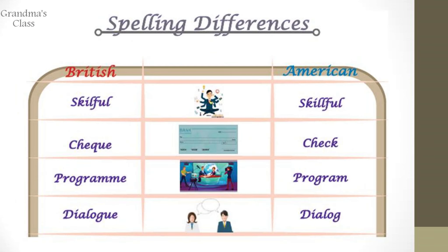Now let us see the spelling difference. In British English, skilful — there is only one L. Whereas in American English you have two Ls. Cheque is spelled C-H-E-Q-U-E — that is British English. C-H-E-C-K — that is American spelling. Third one is programme — American spelling is only P-R-O-G-R-A-M. Fourth word is dialogue. In British it is spelled D-I-A-L-O-G-U-E, whereas in American it is spelled D-I-A-L-O-G.